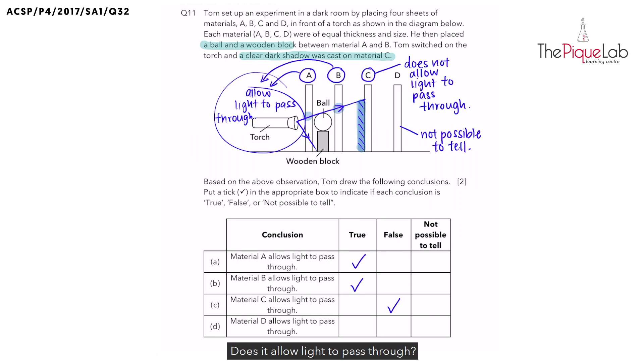And finally, for material D, does it allow light to pass through? It might, but we are not able to tell. So I will put not possible to tell. That is your answer.